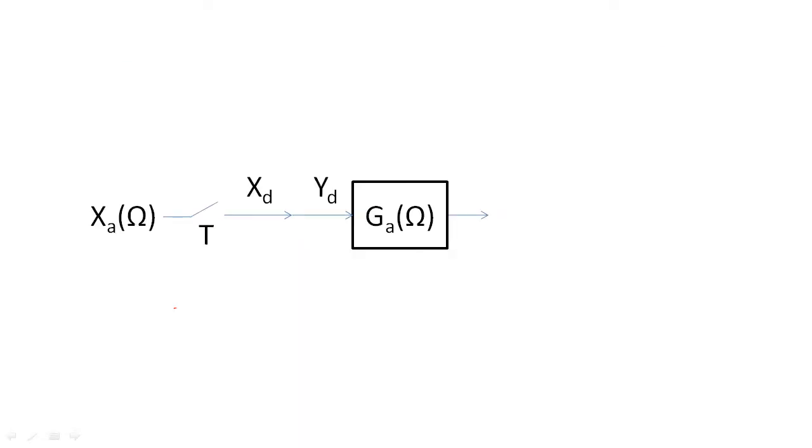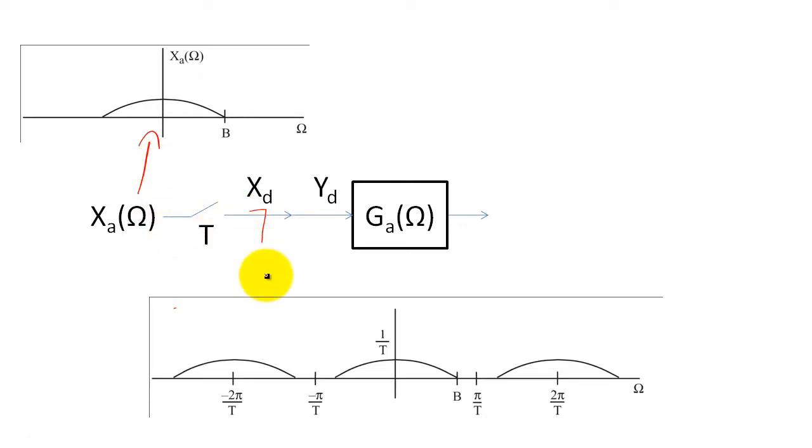Let's recap. Our input x of t has this Fourier transform. When we sample x of t, x of n will have the following Fourier transform that is scaled and replicated. As a quick side note, since we are plotting x of d and y sub d on analog frequencies, we need to divide our digital frequencies by T.